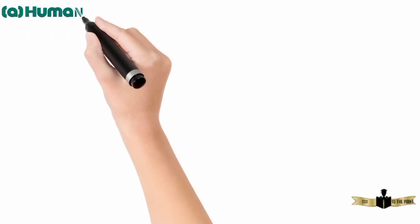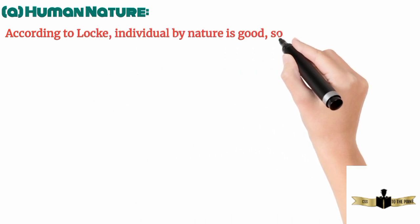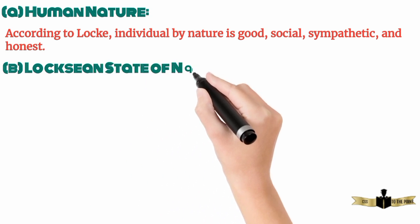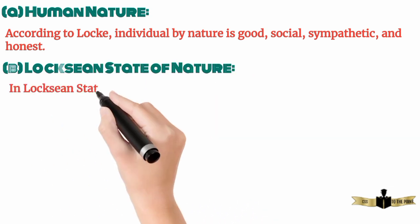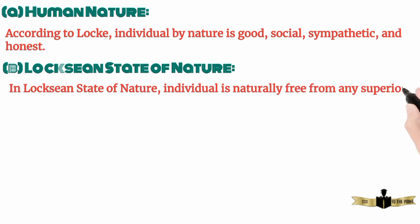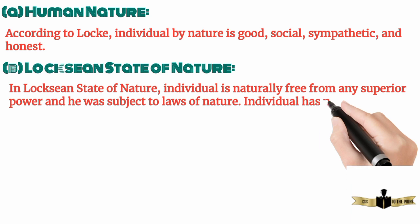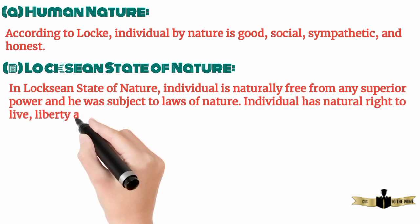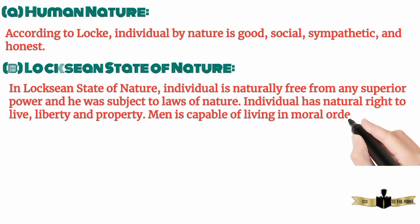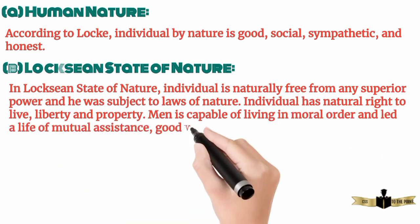1. Human Nature. According to Locke, the individual by nature is good, social, sympathetic, and honest. 2. Locke's state of nature. In Locke's state of nature, the individual is naturally free from any superior power and was subject to the laws of nature. The individual has a natural right to life, liberty, and property. Men are capable of living in moral order and led a life of mutual assistance, goodwill, and preservation.